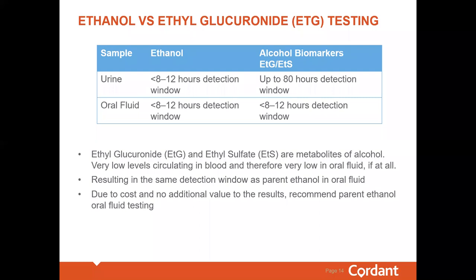Another consideration in oral fluid testing is differences in looking for alcohol. Many are comfortable testing for ethyl glucuronide and ethyl sulfate in urine because it provides a much longer window of detection — up to 80 hours post-consumption — compared to the standard ethanol test, which is only 8 to 12 hours. Unfortunately, we do not see that same benefit for ethyl glucuronide in oral fluid. Since ethyl glucuronide and ethyl sulfate are metabolites of alcohol, they don't cross well into oral fluid. Therefore, the window of detection for these metabolites in oral fluid will mimic that of the standard ethanol test. Since there is no additional value in testing for ethyl glucuronide in oral fluid, we recommend ordering the standard parent ethanol test.